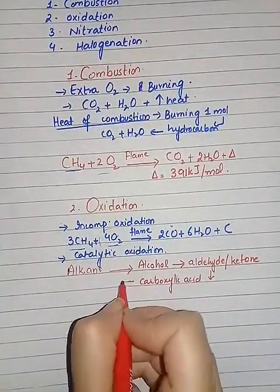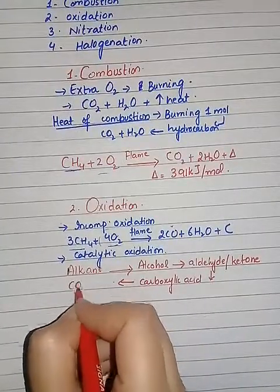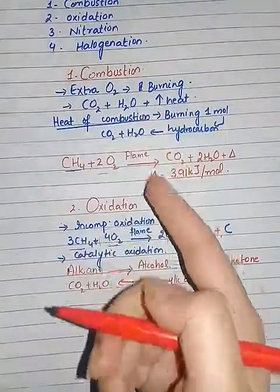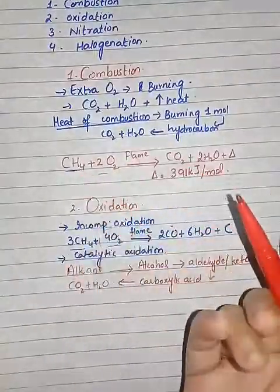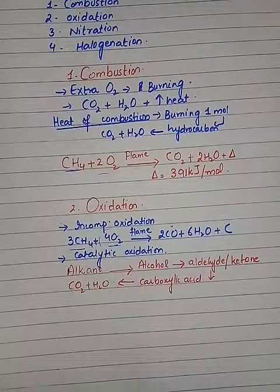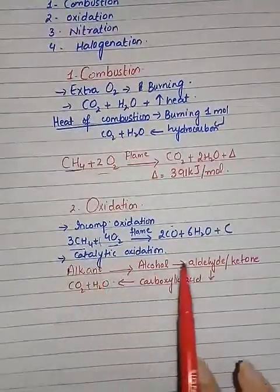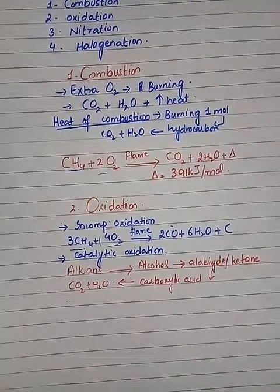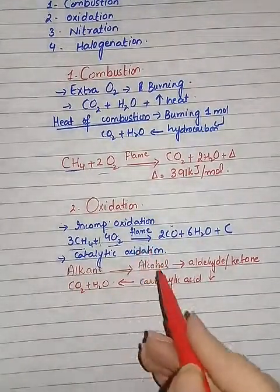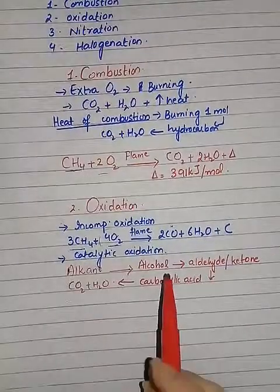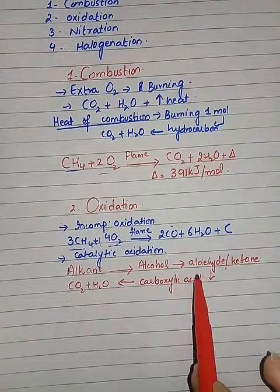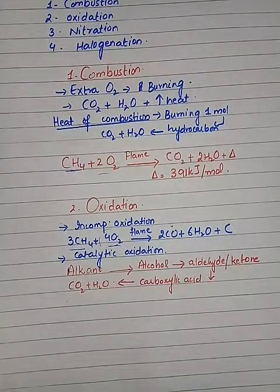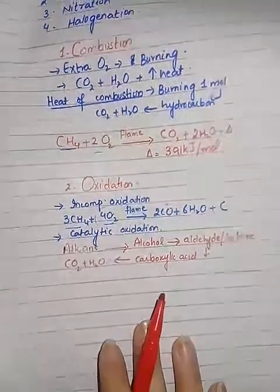On further oxidation it will give carboxylic acid, and upon further oxidation it will ultimately yield carbon dioxide plus water. You can see that in all the reactions, whenever there is interaction of an alkane with oxygen, the ultimate result is either carbon dioxide or carbon monoxide with water. Catalytic oxidation is slower compared to complete combustion or incomplete oxidation. The scheme to remember is: alkane → alcohol → aldehyde/ketone → carboxylic acid → CO₂ + H₂O.